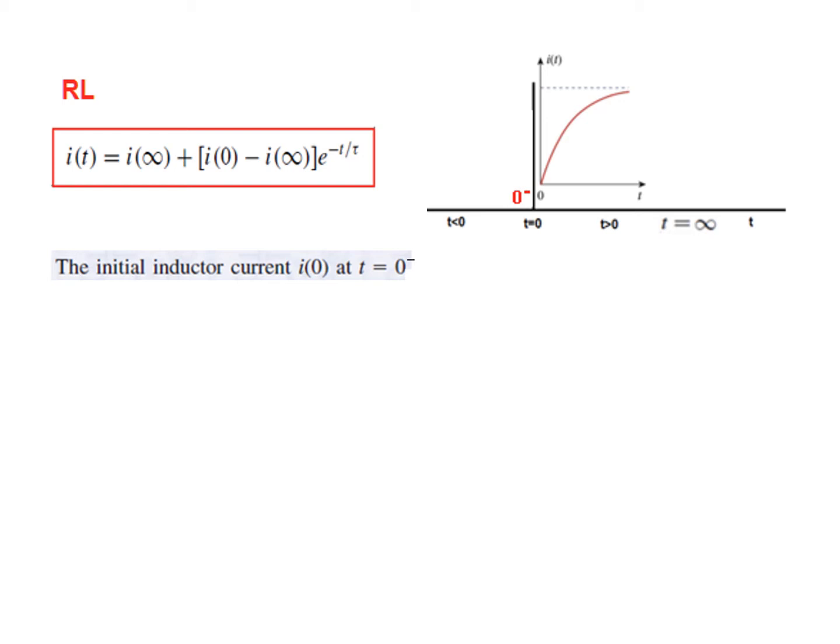So we find the inductor current I(0) first of all. Then we find time constant tau in the transient period. And then we find the current I infinity at t much greater than 0 or t infinity. So let's proceed.